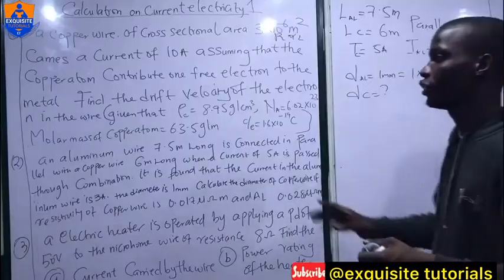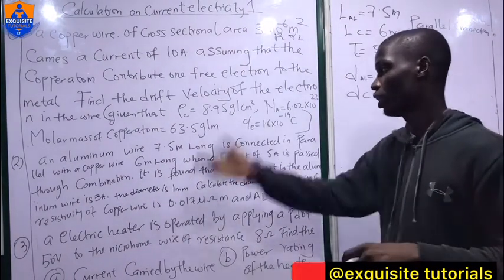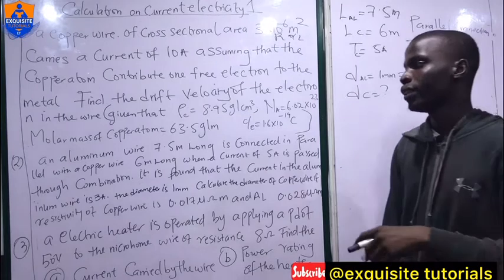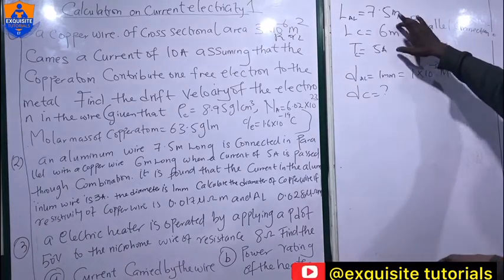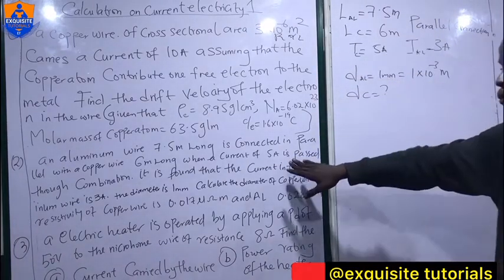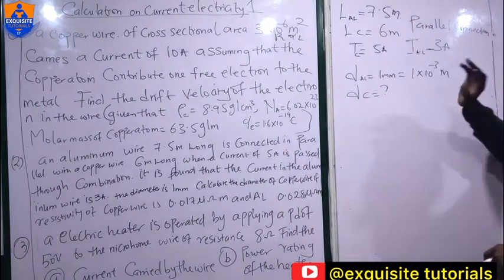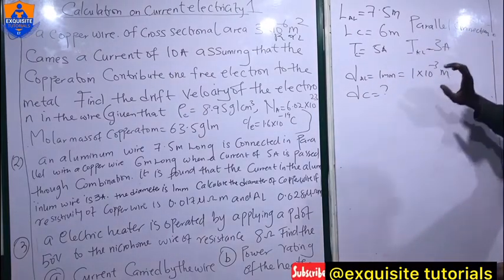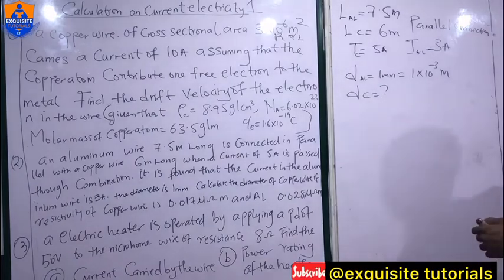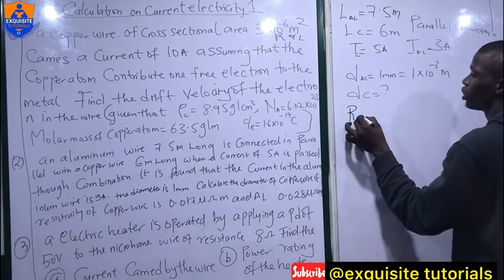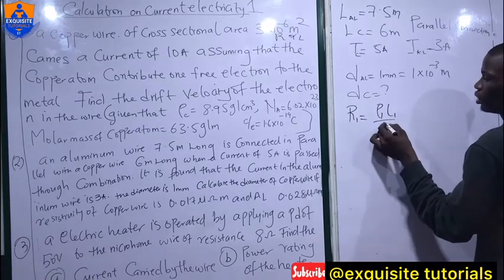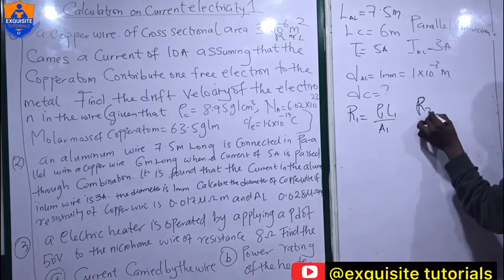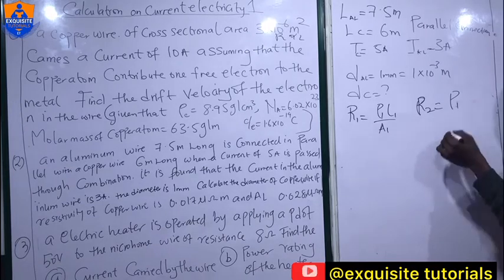For the second question: an aluminum wire 7.5 meters long is connected in parallel with a copper wire 6 meters long. The current through the combination is 5A. The diameter of the aluminum wire is given; the diameter of the copper wire is unknown. The key relationship is resistance: R1 = ρ1·L1/A1 for aluminum and R2 for copper. Note this is resistivity, not density.